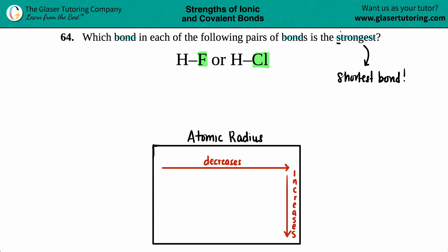We have to find out which is the shortest bond - HF or HCl. It comes from the atomic radius trend. As we go across a period, your atomic radius decreases. But as you go down a group, your atomic radius increases because you're collecting shells. We just have to find out where F and Cl are on the periodic table.